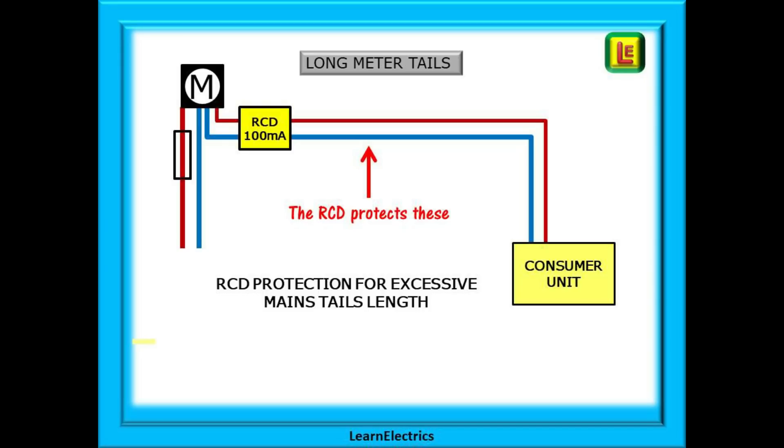In this case we should install a 100 milliamp time delay RCD close to the electricity meter. This RCD will protect these cables now and it should always be considered where the main tails are excessive lengths. What is an excessive length you ask? Anything between 3 and 5 meters may need RCD protection depending how and where it is installed and how it is protected. Different network suppliers have different opinions on length but they all seem to agree that anything above 5 meters should have RCD protection as shown.